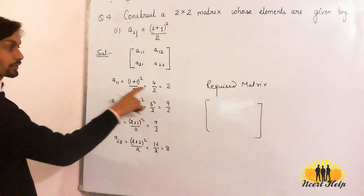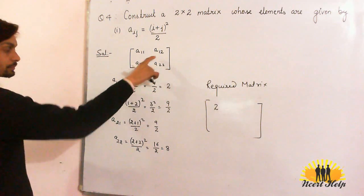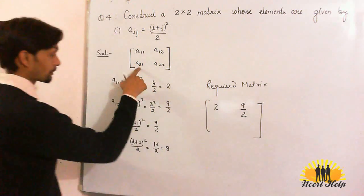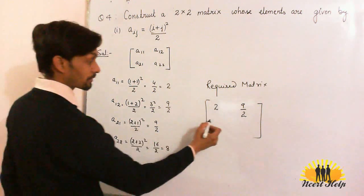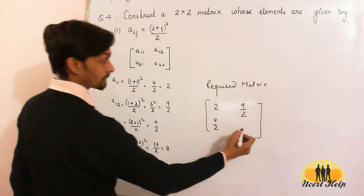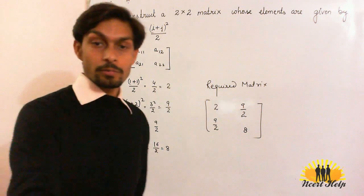A11, the value of A11 is 2. A12, the value of A12 is 9/2. A21, the value of A21 is 9/2. And last A22, it is 8. This is the answer, the required 2×2 matrix of the given problem.